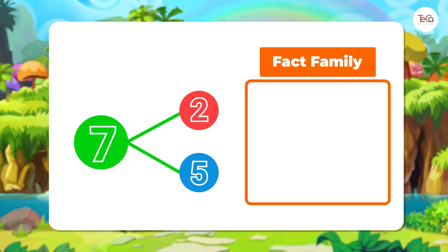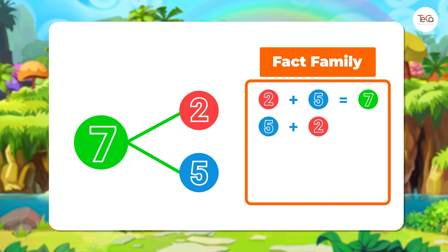First, we have 2 plus 5 equals 7. Second, 5 plus 2 equals 7.